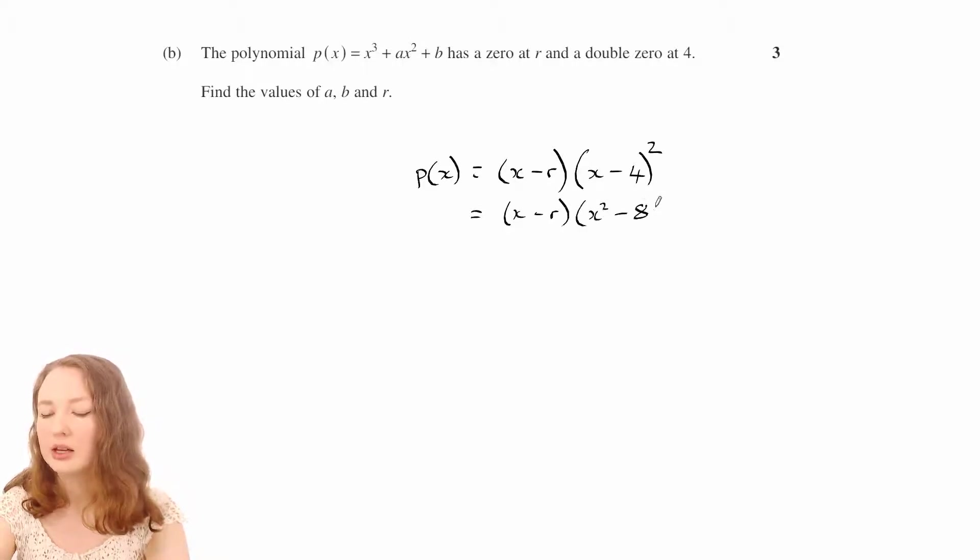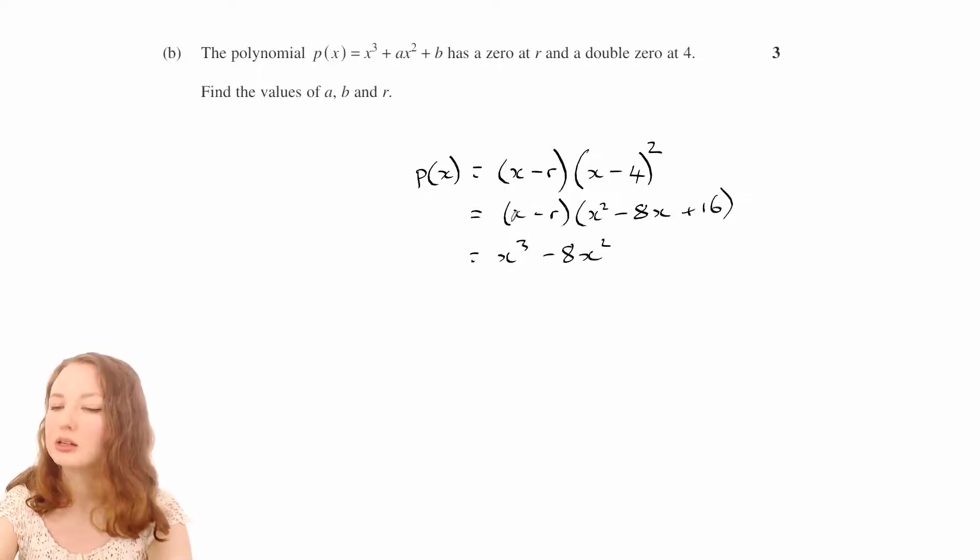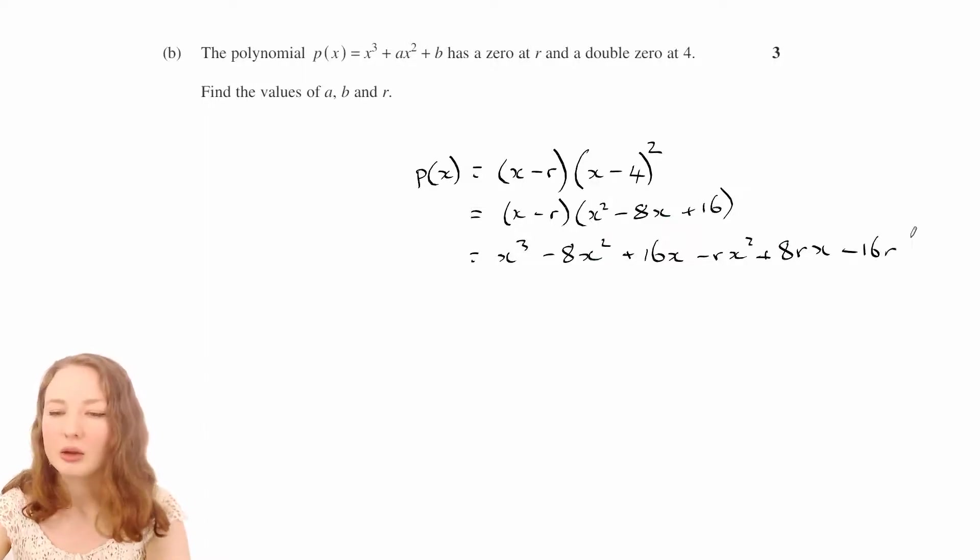Make x squared minus 8x plus 16, and then we've got x cubed, negative 8x squared, and 16x minus rx squared, those negatives cancel there, you've got plus 8rx, minus 16r, and we want that to be equal to this, which is x cubed plus ax squared plus b.